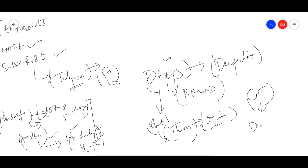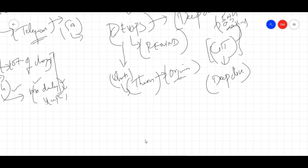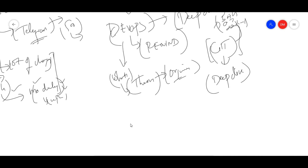Then we go into Git. We have not done a deep dive into Git, so we will do a complete advanced Git — whatever the basics are, we'll go totally advanced. You'll understand what is happening internally in Git — folder creation, merge conflicts, and so on. After that, we go into Jenkins.